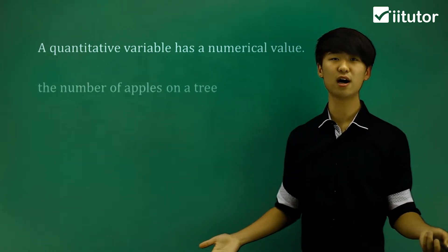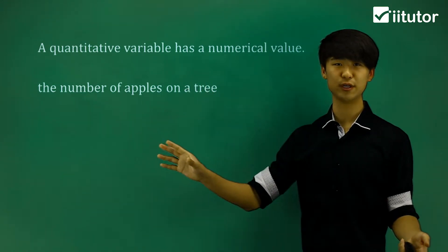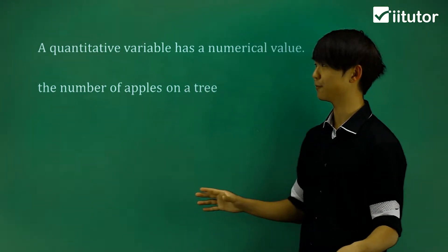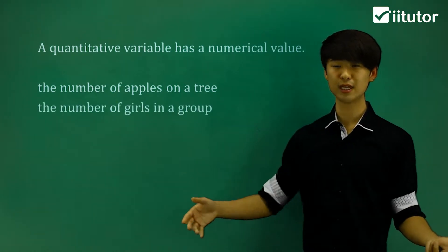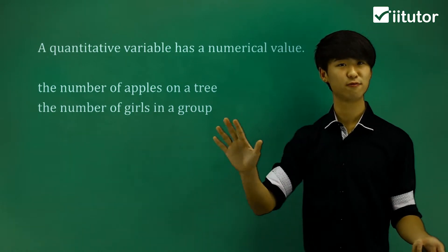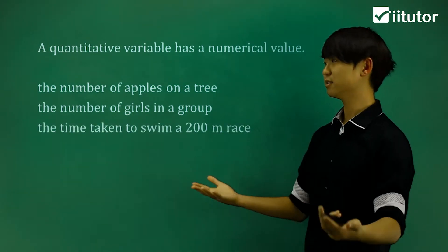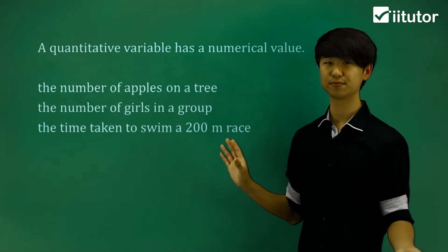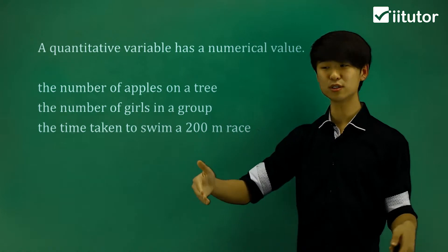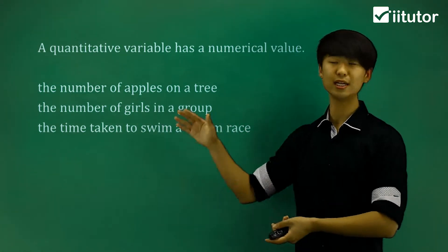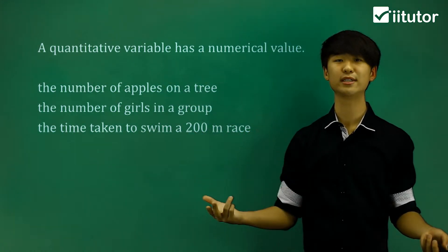Some examples are the number of apples on a tree — we can count and say there are nine apples on that tree; they have a specific number. Another example is the number of girls in a group — we can look at a group and say there are five girls there. Another example is the time taken to swim a 200-meter race, which will also have some numerical value. These are all situations where we can call it a quantitative variable.